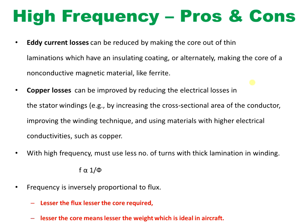Going from 60 Hz to 400 Hz, we do face some disadvantages. Eddy current loss may increase and copper loss will increase. To mitigate these: eddy current loss can be minimized by maintaining thin laminations in the core, and copper loss can be minimized by using high electrical conductivity materials like copper.